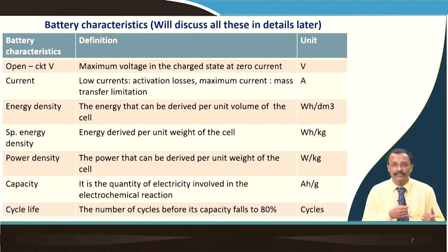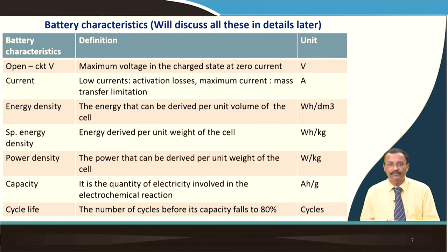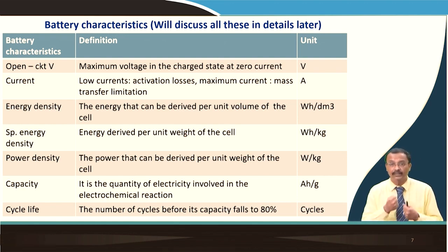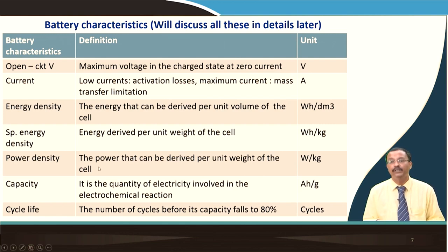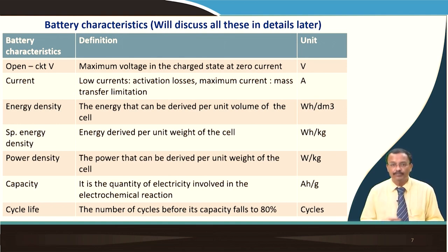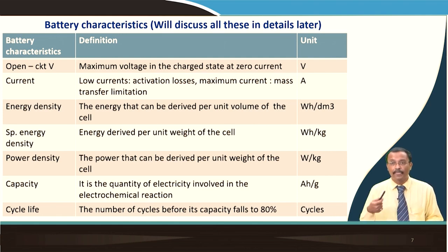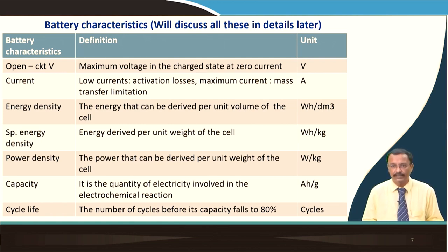Energy density is the energy that can be delivered per unit volume of the cell — volumetric energy density. Specific energy density is the energy delivered per unit weight of the cell. Power density is the power derived per unit weight of the cell, in watts per kilogram. Capacity is the quantity of electricity involved in the electrochemical reaction, usually defined in ampere-hours per gram. Cycle life is the number of cycles before capacity falls to 80 percent — also termed cyclability. This is only valid for rechargeable batteries; for primary batteries, cycle life does not have any meaning.